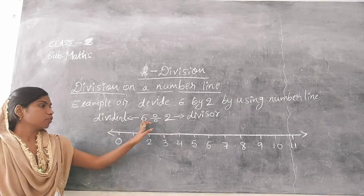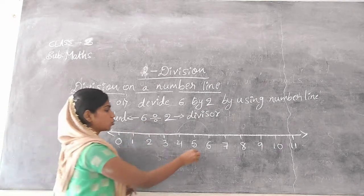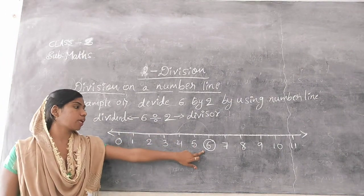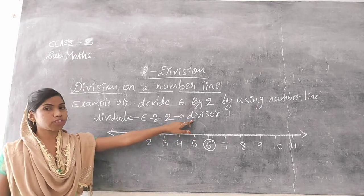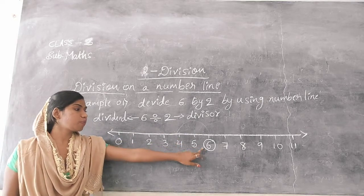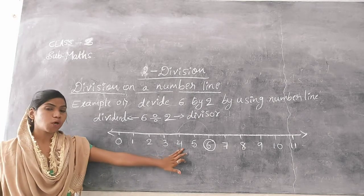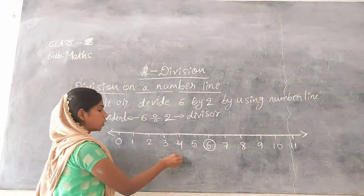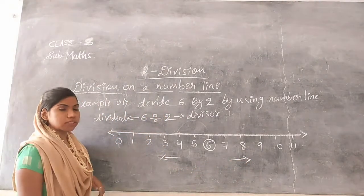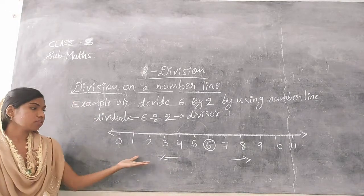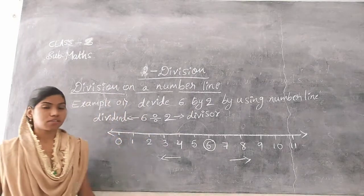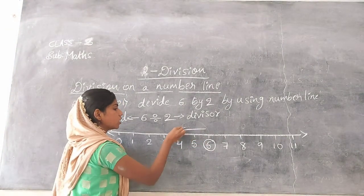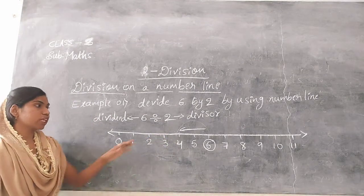First, find the number 6 on the number line. The second number is 2, which is the divisor. From the number 6, jump towards the left side by taking 2 steps until you reach 0. It is the left side and it is the right side.